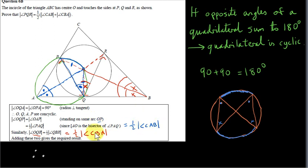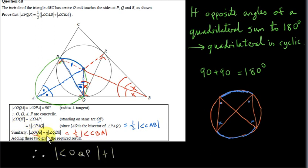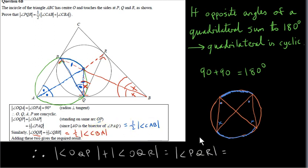If we add half of CAB and half of CBA, we get the right-hand side of what we're trying to prove after factoring out the half. The right-hand side is the sum of angle OQP and angle OQR. But the sum of these two angles is just angle PQR. So angle PQR equals half of angle CAB plus angle CBA, which is what we had to prove.